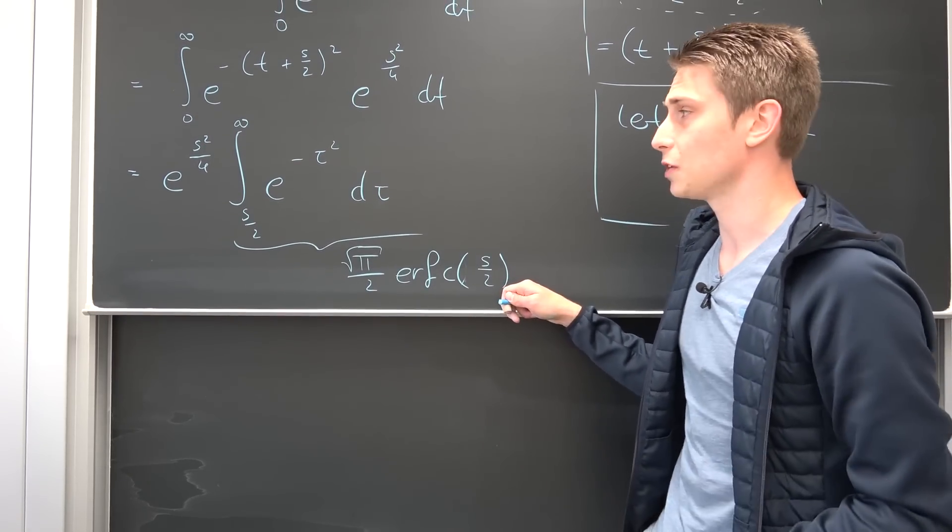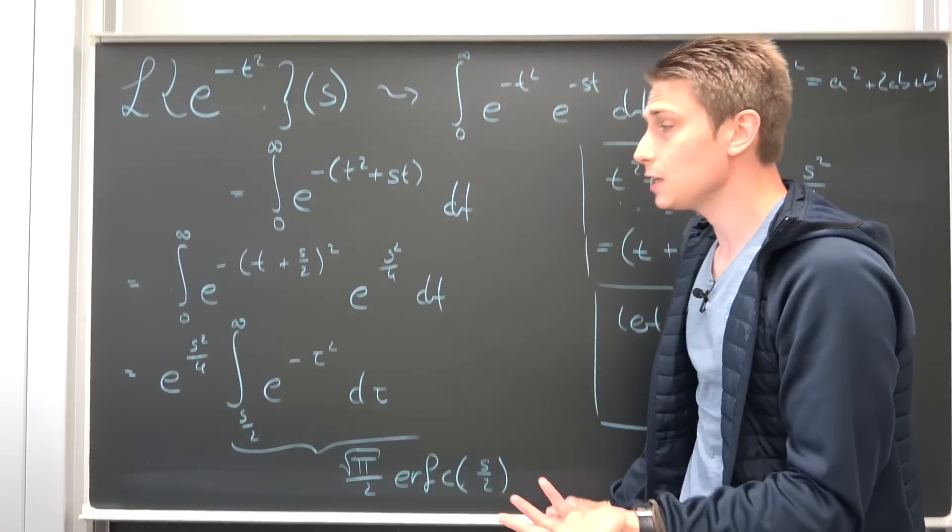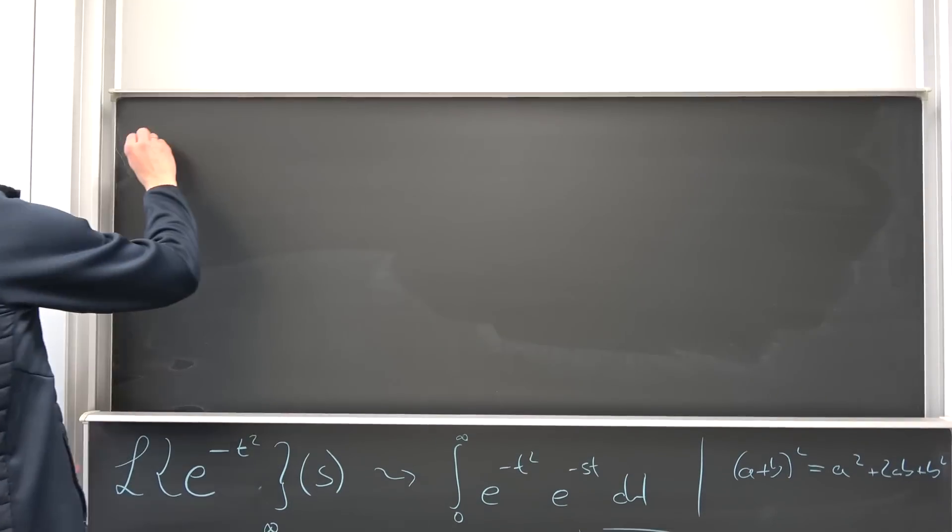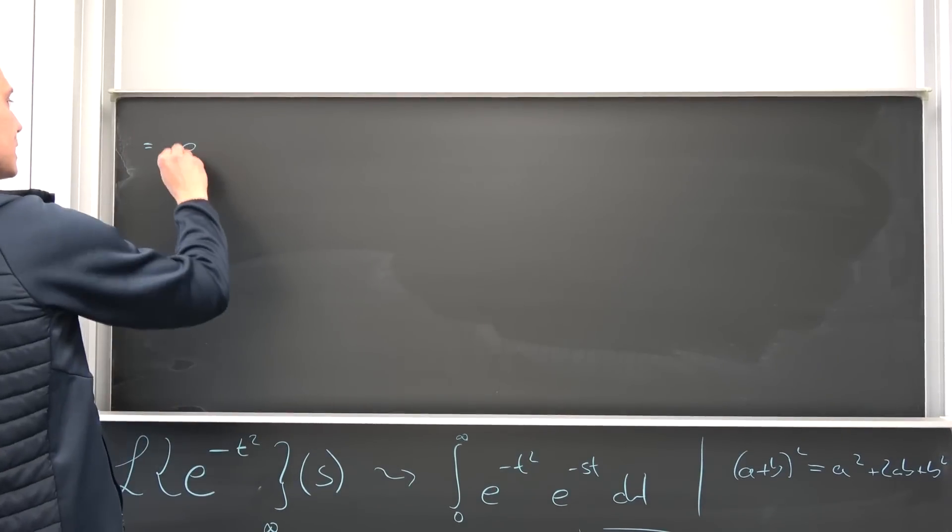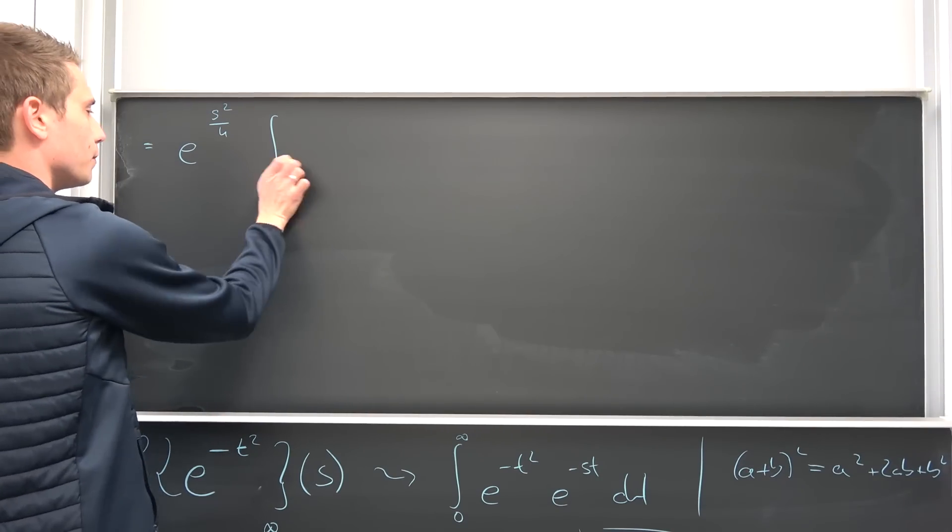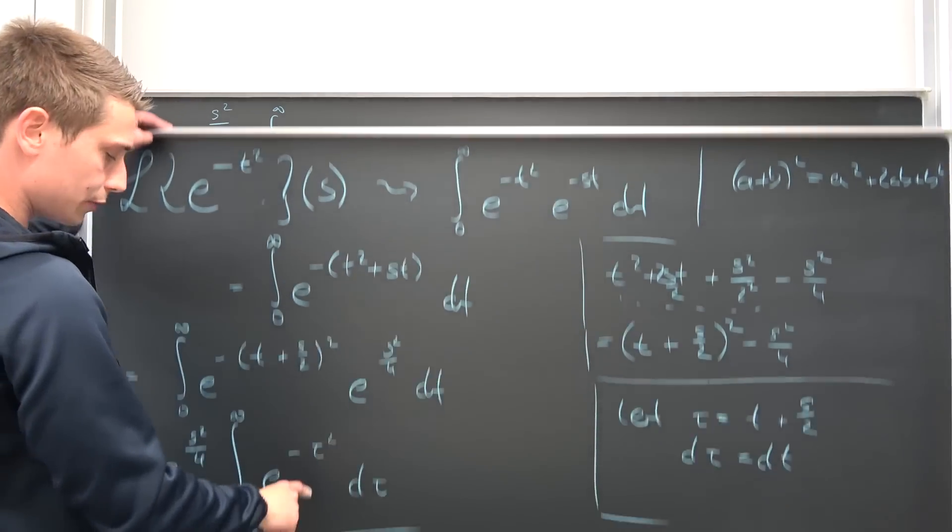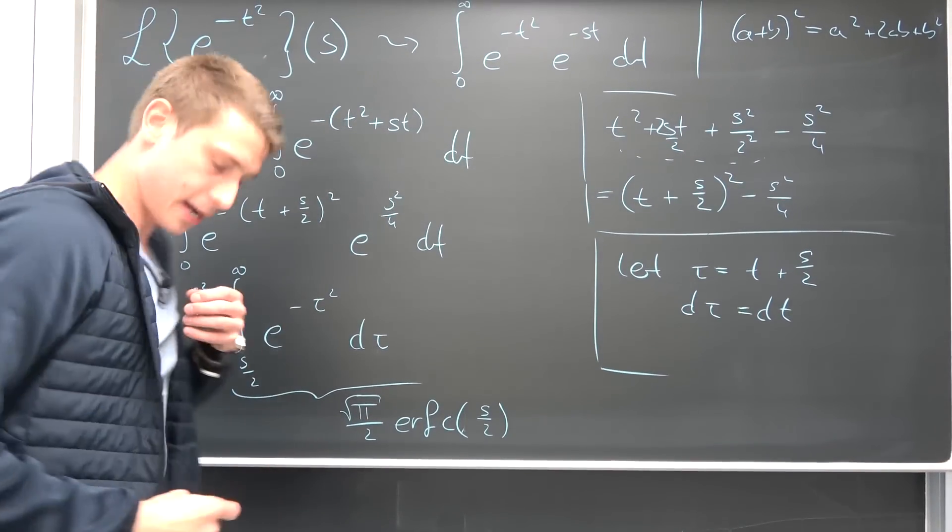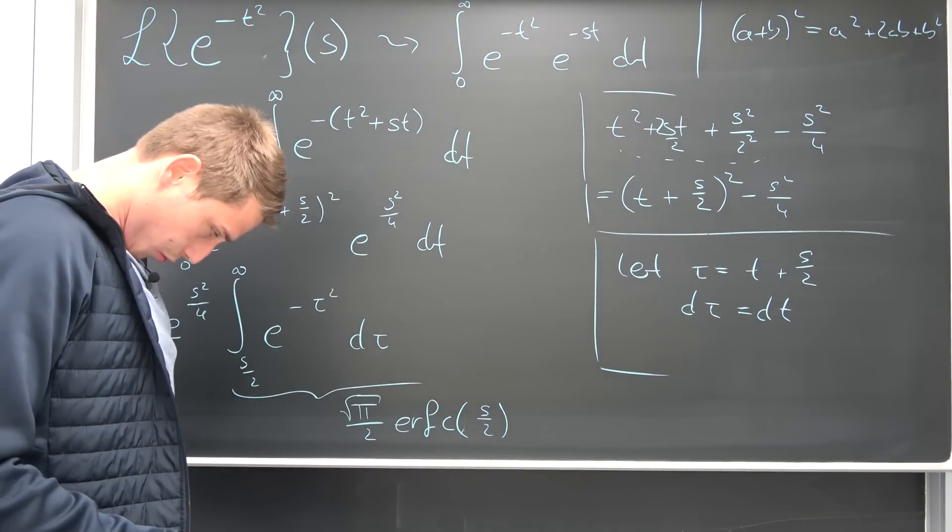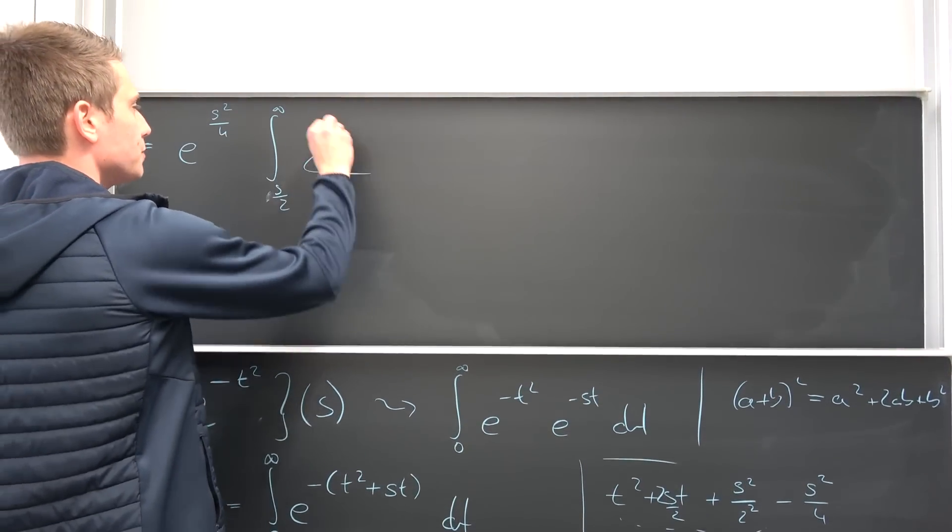But you can take kind of a different approach, namely using the Taylor series on this thing right here. That's why I'm making the video now because we talked about Taylor series, meaning if we still have this Laplace transform, that's e to the s squared over 4 times, okay, integral from s over 2 to infinity and now for the Taylor series expansion of this thing right here. I just thought that my microphone dropped off. That's why I was looking down. Hello, boys and girls.